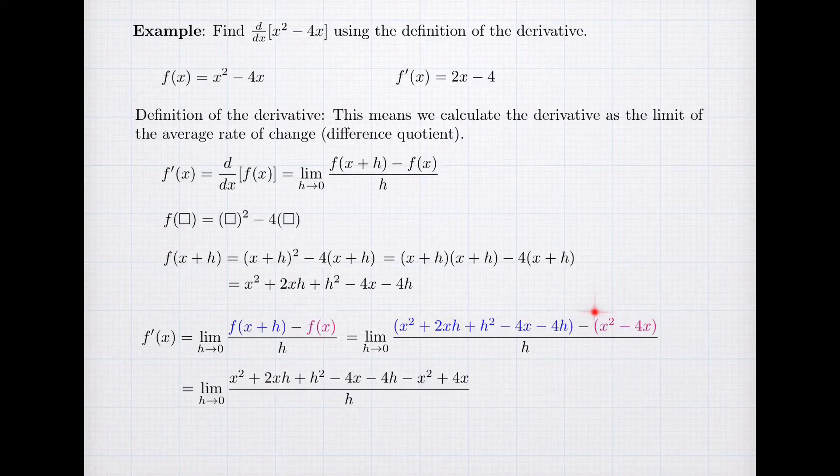So when I distribute it, I get minus x squared, minus x squared, and I get plus 4x. All right. So what we're doing right now is we're not doing anything with a limit. We're focusing on the input of the limit.